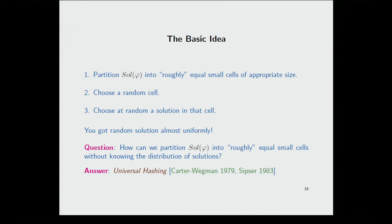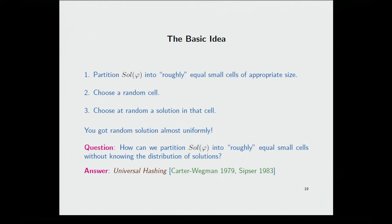Now, what is the basic idea? So the basic idea goes back to work by Carter and Wegman and then Sipser. And then it's been used, for example, the reduction from NP to UP uses similar ideas. So these are not new ideas. You take the solution space and you divide it into roughly equal small cells. And then you choose a cell at random. And the cell is small, a cell has a small number of solutions. So you can enumerate precisely the number of solutions in the cell and then you choose randomly one among them. If the cells are roughly equal, then this would give you an almost uniform distribution.